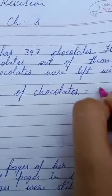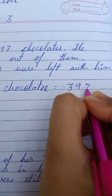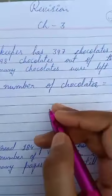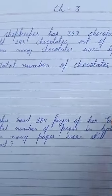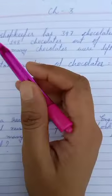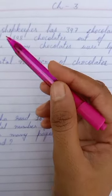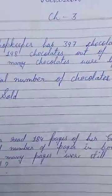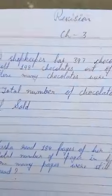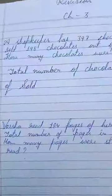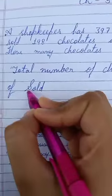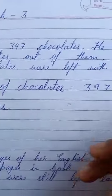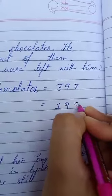Next, 198 - what did he do? He sold them. Number of chocolates sold. Here you have to write: number of chocolates sold, or you can write some other statement, sold chocolates. Write it short. Number - I wrote number in short form. Make it small. Number of sold chocolates - how many? Equal to 198.